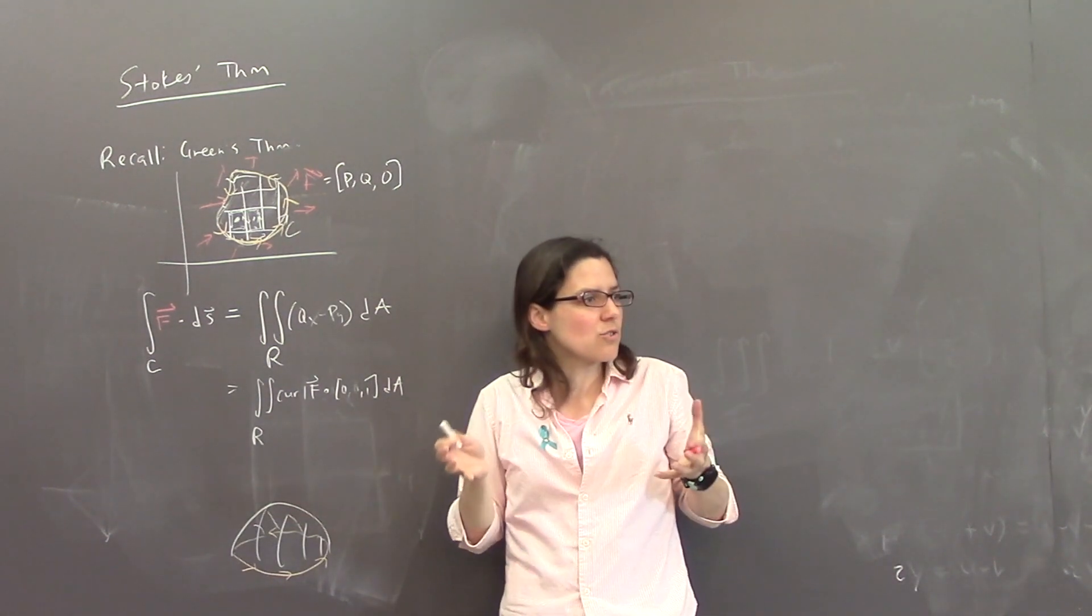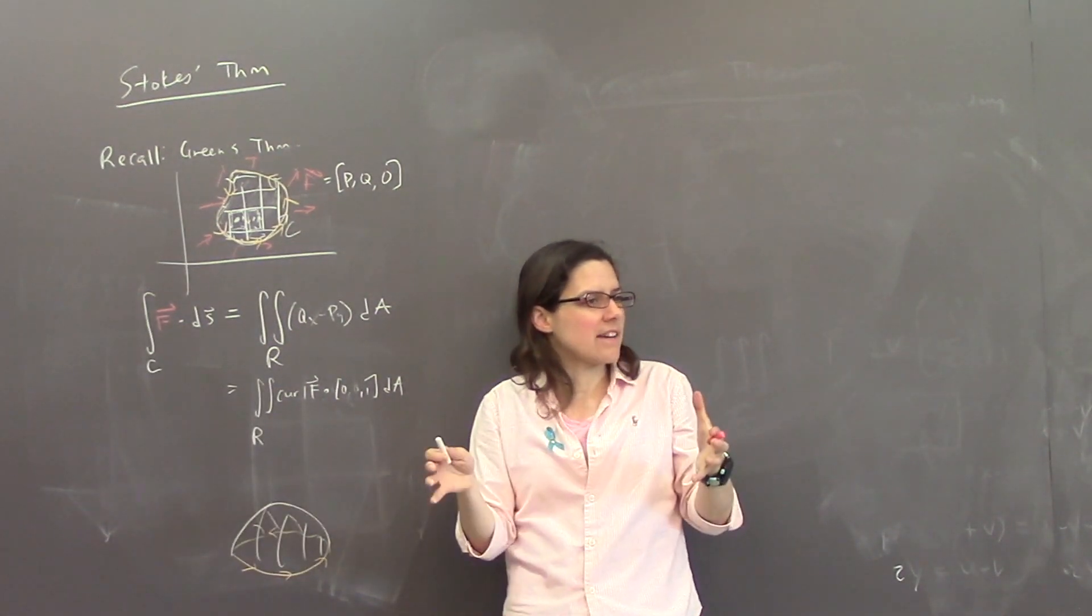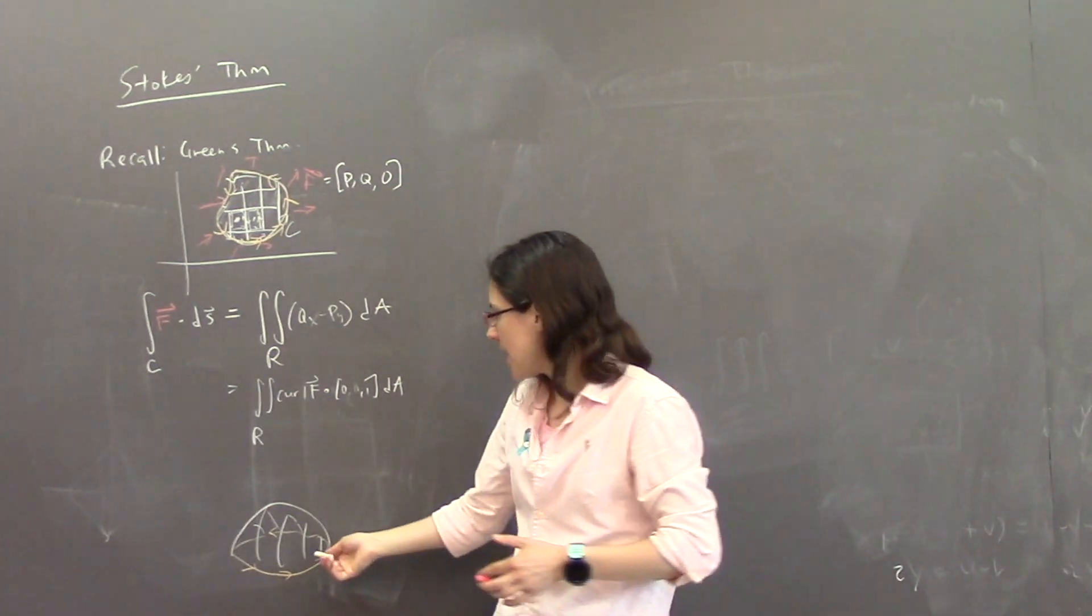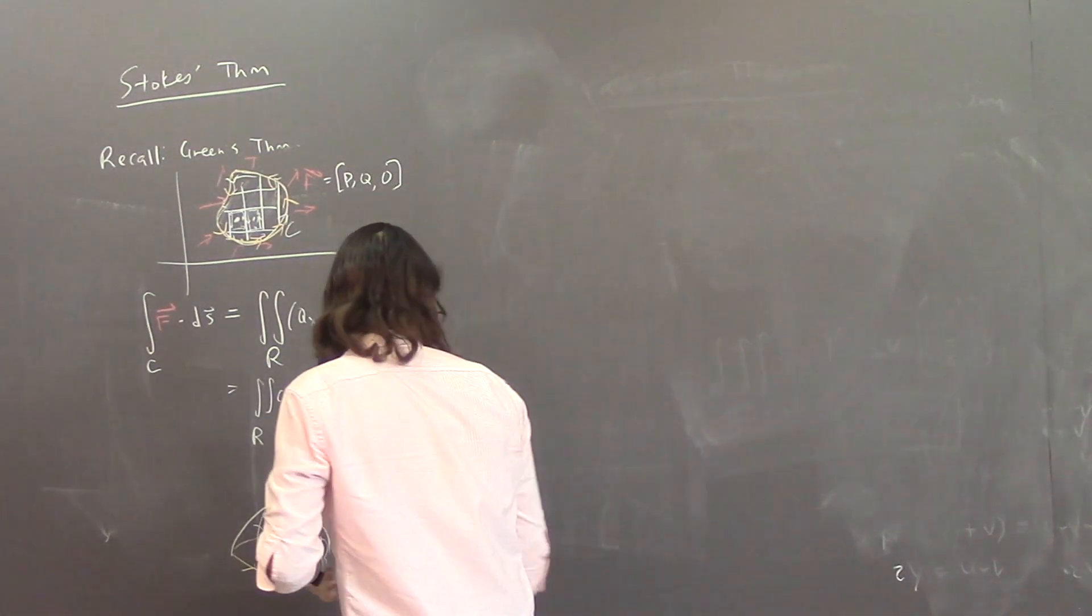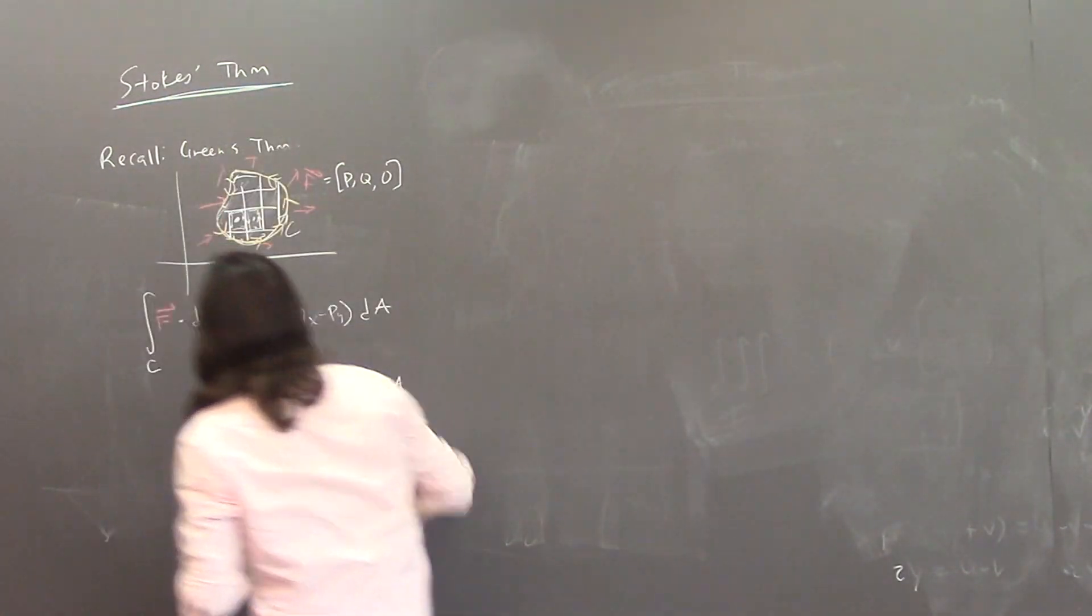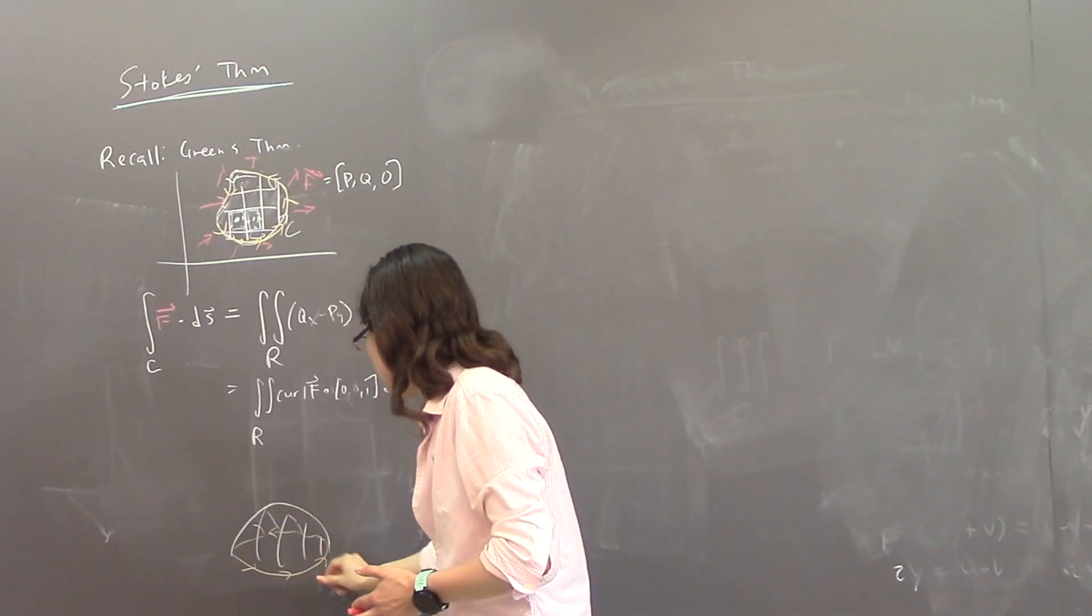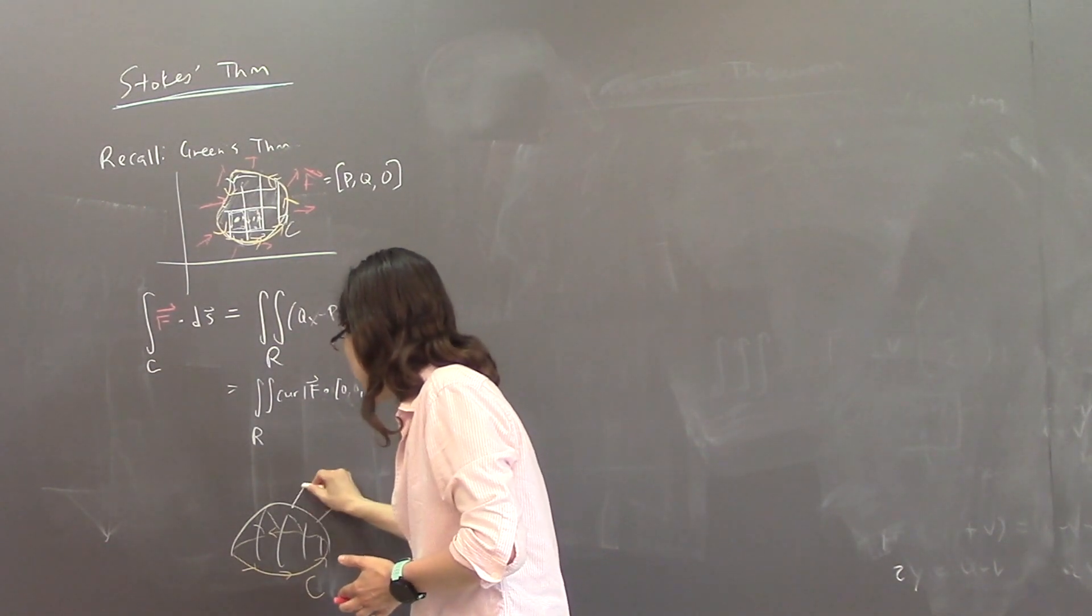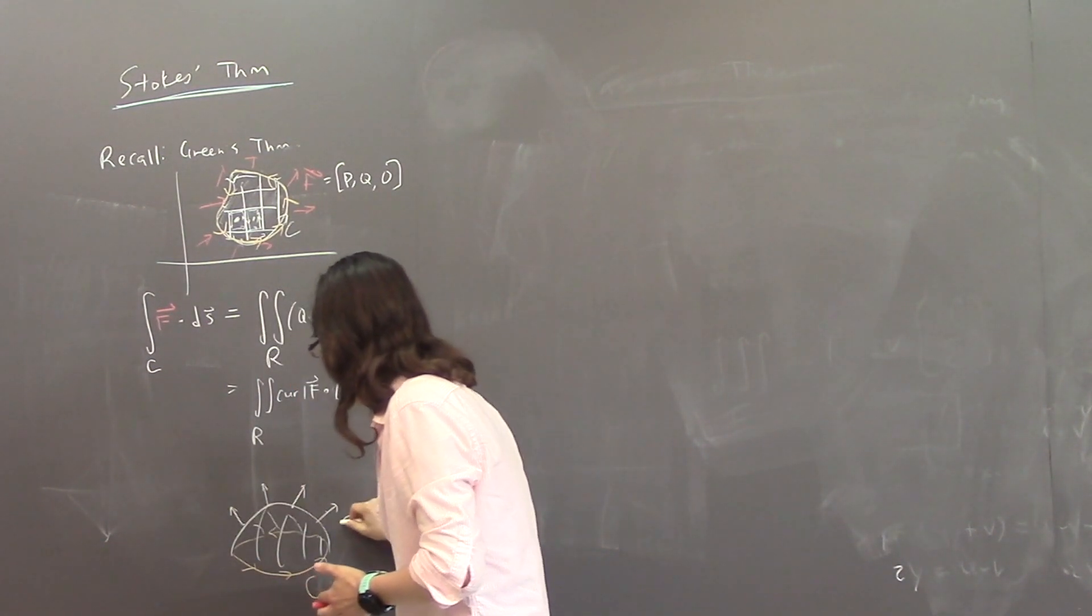You can break this up into little squares, like a mesh bag, sort of, every little, all the little squares. And Stokes' theorem, which we don't have a color for Stokes' theorem, but we'll make it blue. Stokes' theorem says